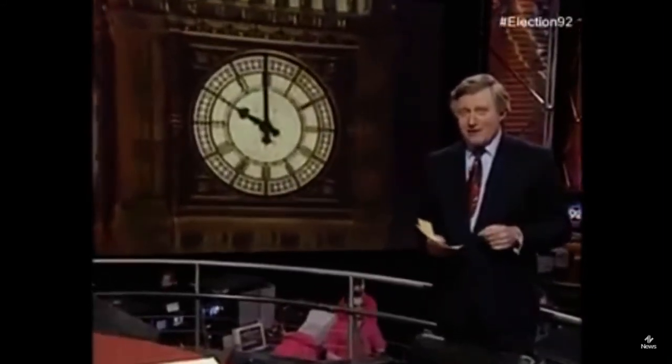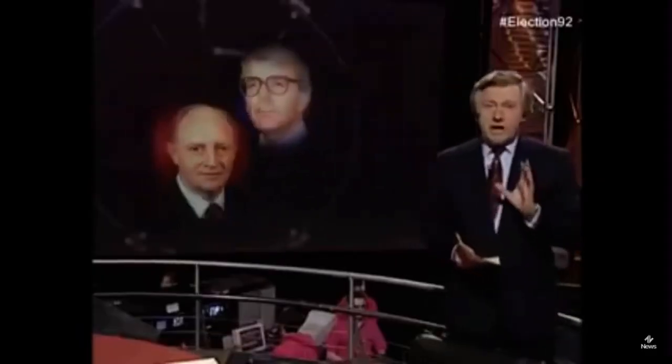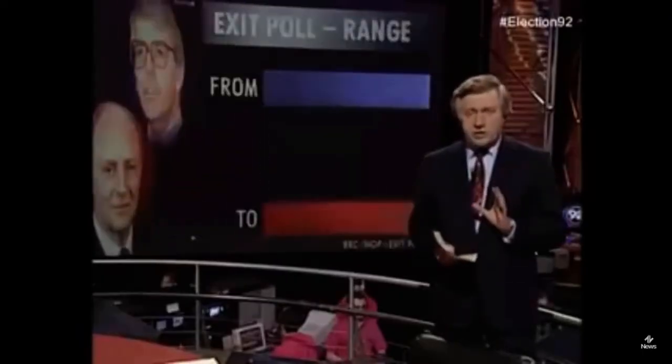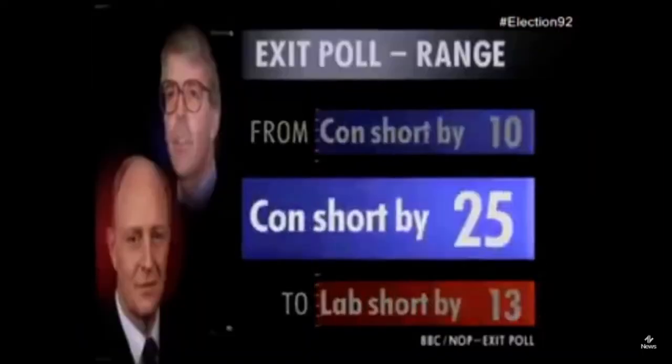The result is that John Major wins the election. It's a modest majority of 21 seats, which is going to cause trouble for him in the future. Because if you've only got a majority of 21, it means that it only takes a very small rebellion for you to start losing votes. But he wins, and that is unexpected.